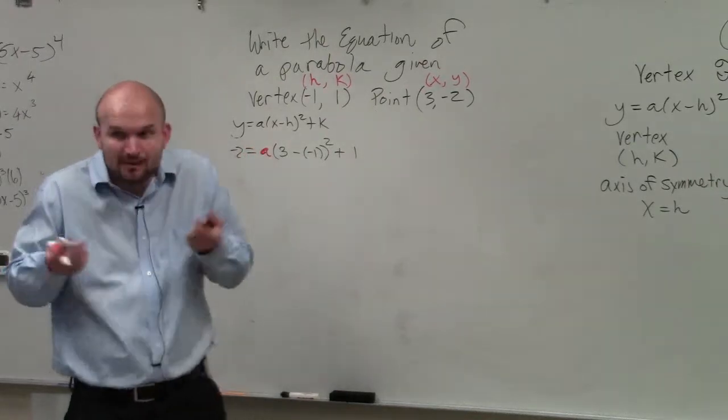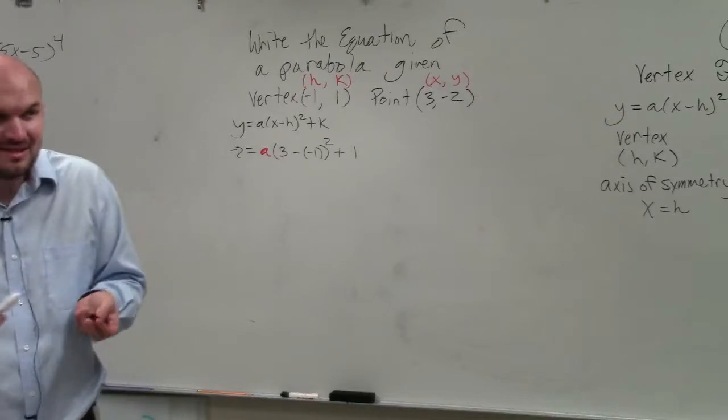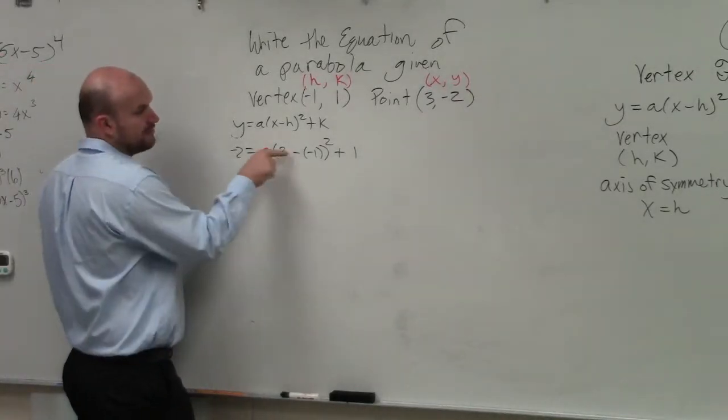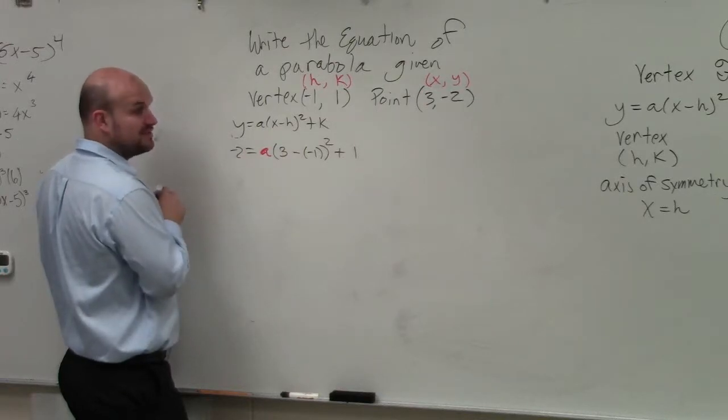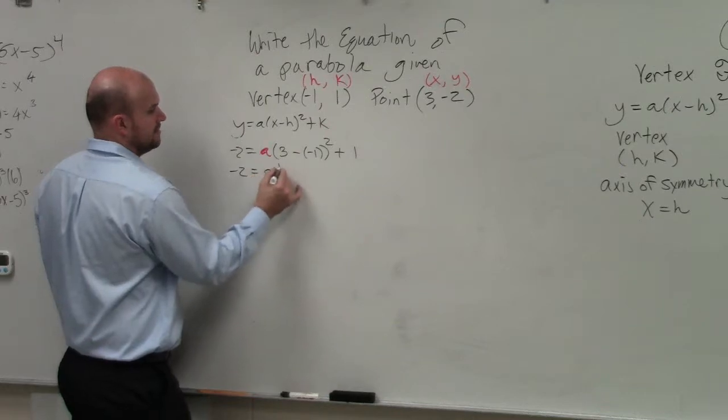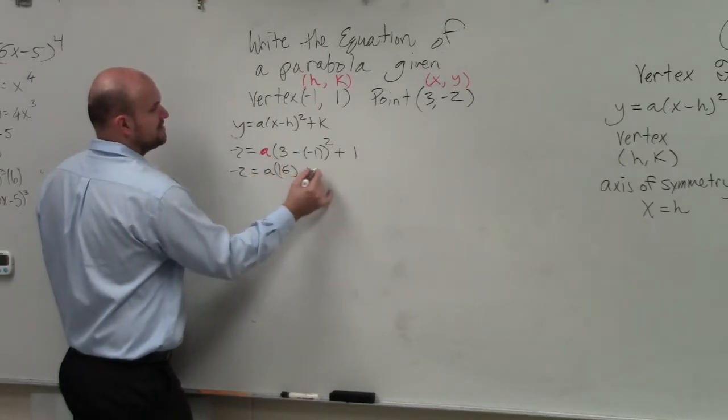But do we now have an equation in one variable? So we can easily solve that, right? We just got to do a little bit of math. So 3 minus negative 1 is 3 plus 1, which is 4. 4 squared is 16 plus 1.